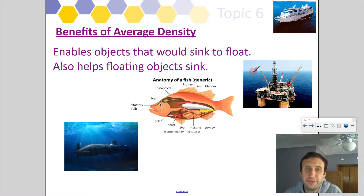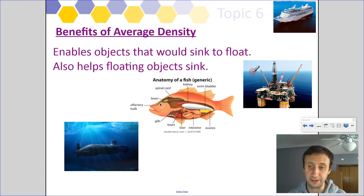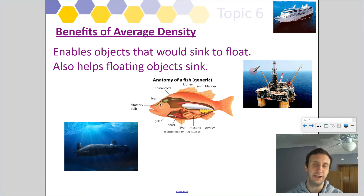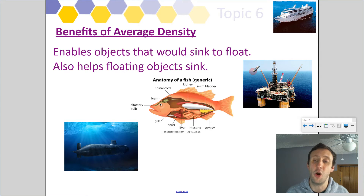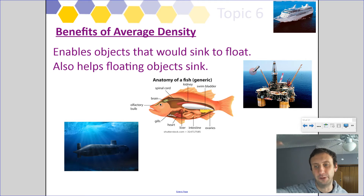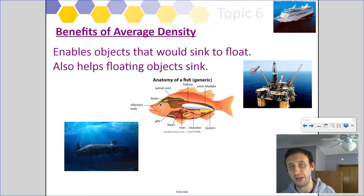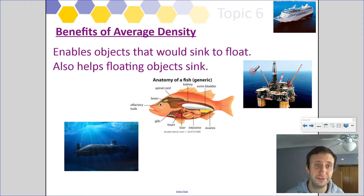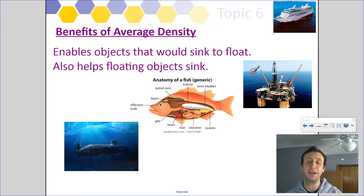Average density enables objects that would sink to float, and also helps objects that normally float to sink. A submarine has compartments that fill up with water to increase average density above water so it sinks, or it pumps out the water to leave empty space, lowering average density below water so it floats back up. Fish have a swim bladder that works the same way to manipulate their density so they can sink or rise just like a submarine.